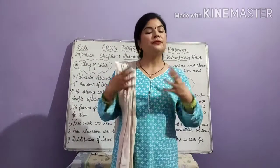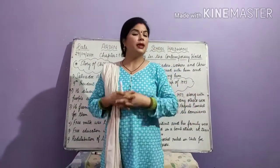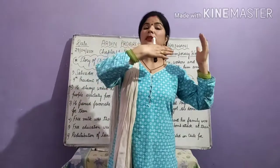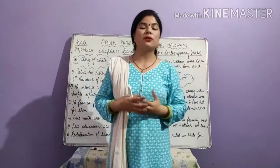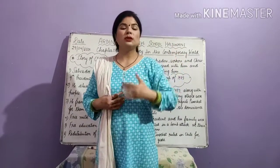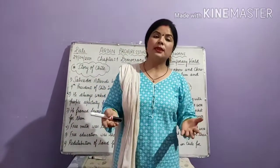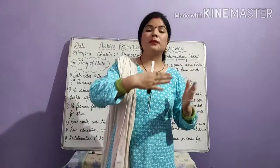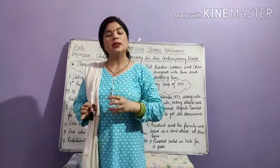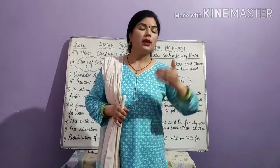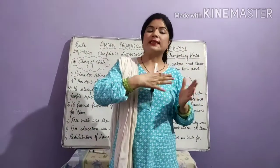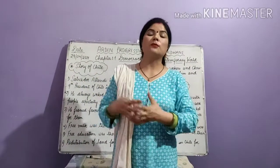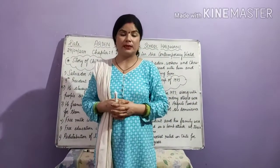Then we came to know about the different key features of democracy. We understood the term federalism. Federalism means different levels of government. We have three levels of government: central government, state government, and local government. Central government takes care of the whole country. State government takes care of individual states. Local government exists to reduce the burden of the state government, and it works in two ways — Panchayati Raj, which takes care of villages, backward areas and interiors, and municipal corporation, which takes care of different towns and cities.